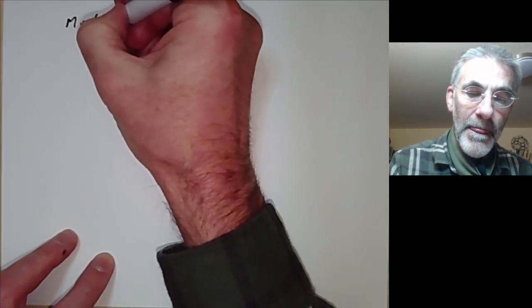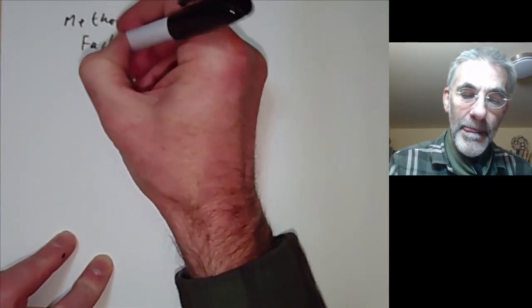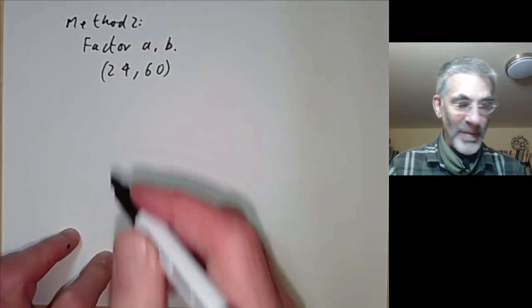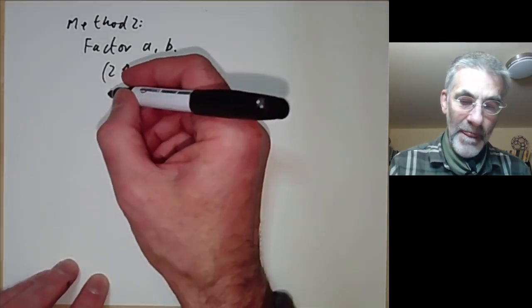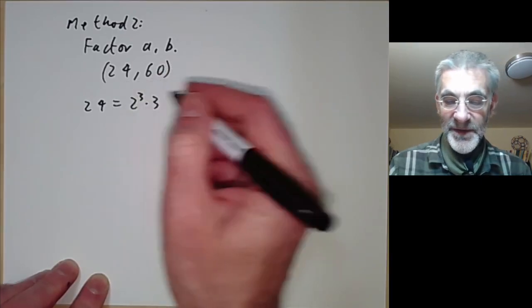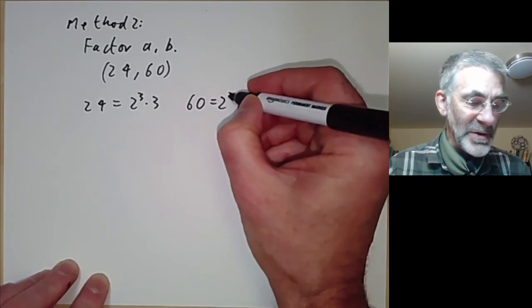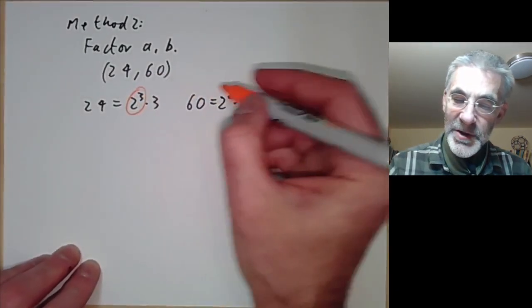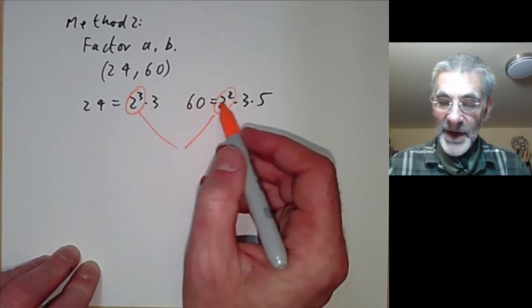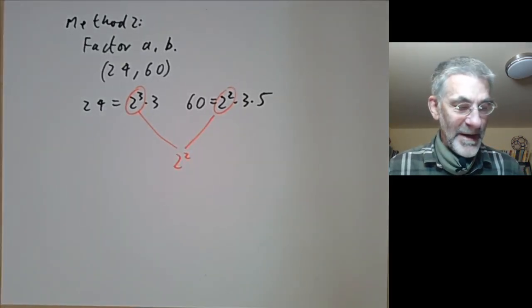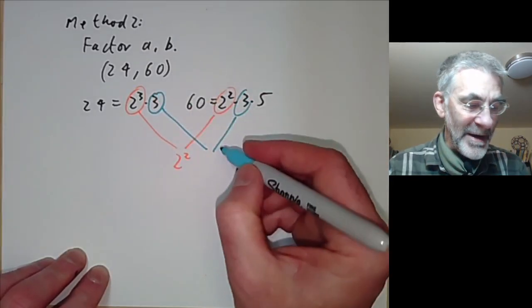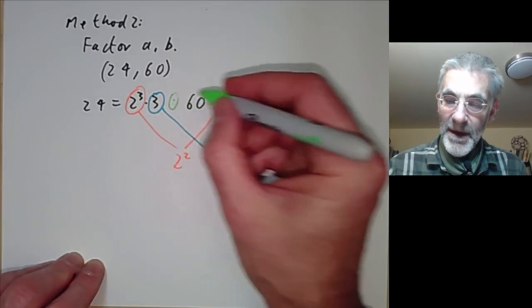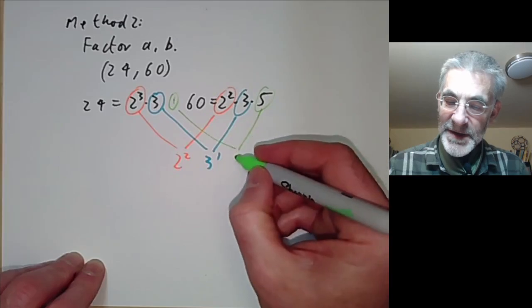Let's try Method 2: we first factor a and b into primes. For example, to find GCD(24, 60), we write 24 = 2³ × 3 and 60 = 2² × 3 × 5. Now I can figure out the greatest common divisor by taking GCD(2³, 2²) = 2², GCD(3, 3) = 3¹, and GCD(5⁰, 5¹) = 5⁰.